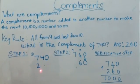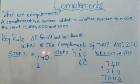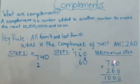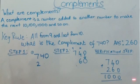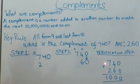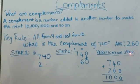Now the answer for seven hundred and forty is two hundred and sixty. Let's check if it is right. Seven forty plus two sixty equals thousand. We were right. The answer for seven forty is two sixty.